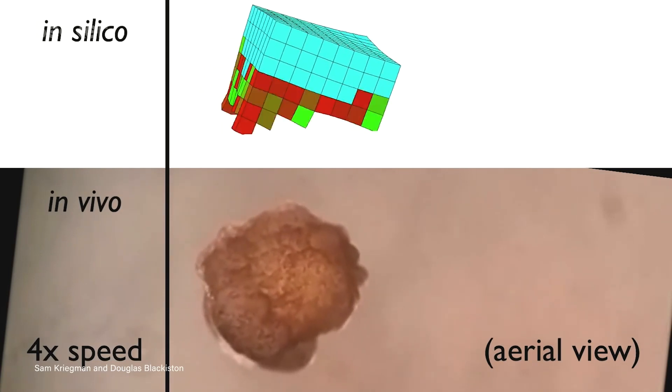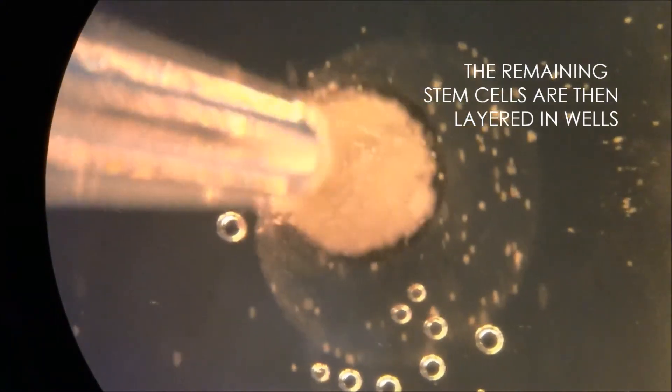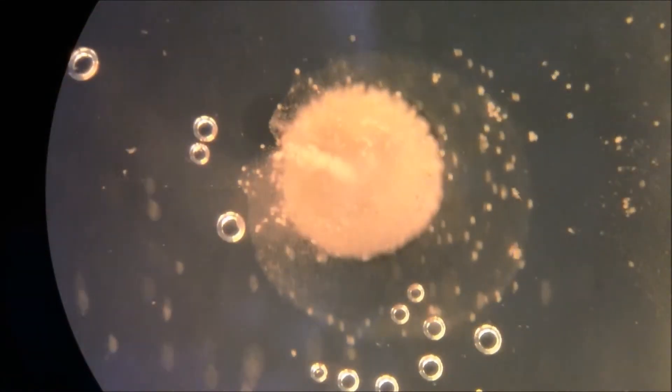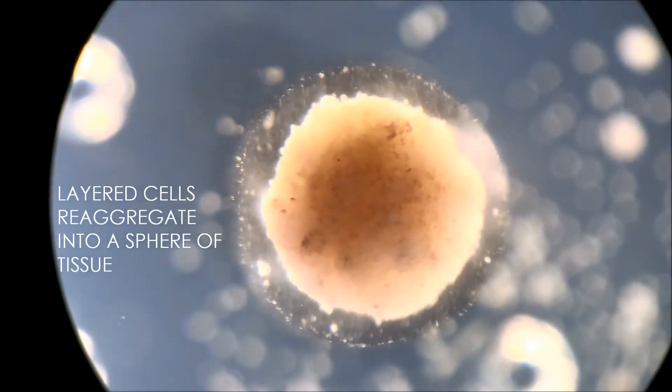And now keep in mind that genomically speaking these spheres are frogs because they are 100% frog DNA. Except clearly we're not talking about frogs anymore. The new life form is less than a millimeter in diameter, contains its own food stores that allows it to live in a standard freshwater environment for about a week before it runs out of energy and then slowly falls apart.